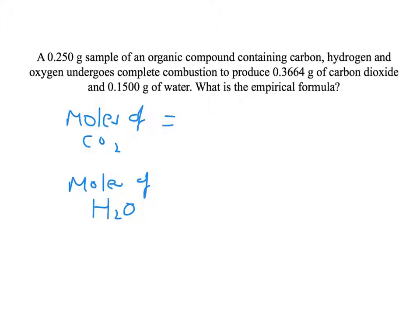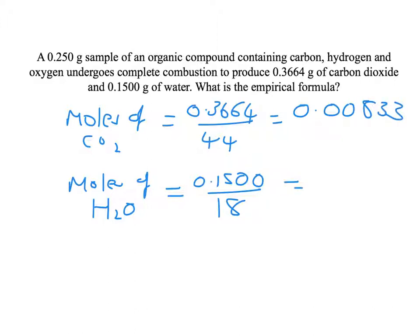So moles of carbon dioxide 0.3664 divided by 44 and for water 0.1500 divided by 18. So for carbon dioxide that is 0.00833 and for water that is going to equal 0.00833 again. So now I'm going to add in my little extra step here before moving on. I need to find out how much of my original sample was made up of oxygen, because I also need to know my moles of oxygen. So I know I've got that many moles of carbon dioxide so I can find the mass of carbon in that.